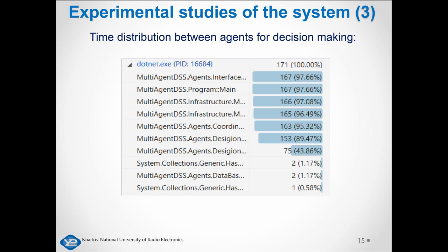The distribution of time between agents for decision-making is shown on slide 15. To make one decision, the system needs about 170 milliseconds, which is a good indicator, but can be improved if additional decision-making agents are added to the system, which will allow horizontal scaling of the resulting system.